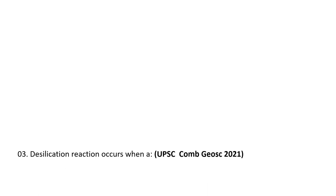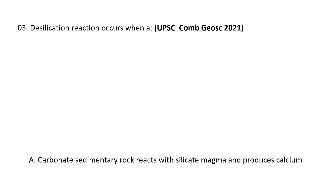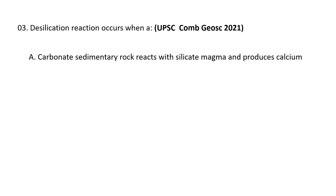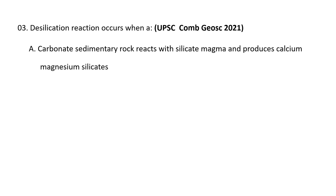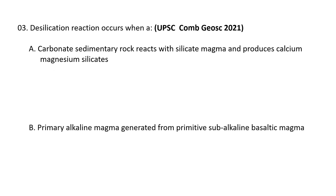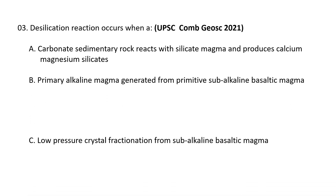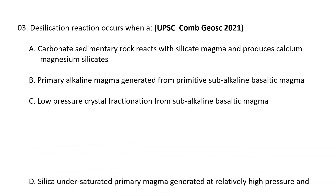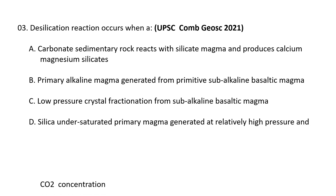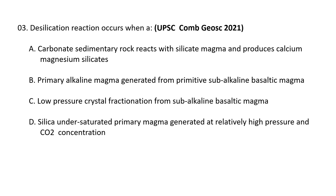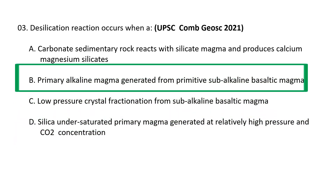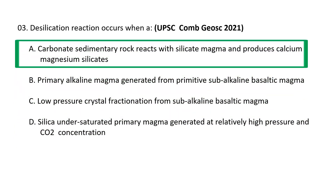Question 3: Desilication reaction occurs when: (a) a carbonate sedimentary rock reacts with silicate magma and produces calcium-magnesium silicates, (b) primary alkaline magma generated from primitive sub-alkaline basaltic magma, (c) low pressure crystal fractionation from sub-alkaline basaltic magma, or (d) silica-undersaturated primary magma generated at relatively high pressure and CO₂ concentration. The correct option is A — a carbonate sedimentary rock reacts with silicate magma and produces calcium-magnesium silicates. This is known as a desilication reaction.